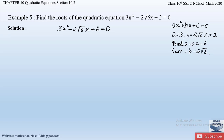In the previous example there was no root term, but since this question has a root term it will be slightly different. The factors of 6 are 3 × 2, but those don't give a sum of 2√6. However, 6 can also be written as √6 × √6, because √6 × √6 = 6^(1/2) × 6^(1/2) = 6^1 = 6. And √6 + √6 = 1√6 + 1√6 = 2√6, which matches our required sum. So we write √6 + √6 instead of 2√6.